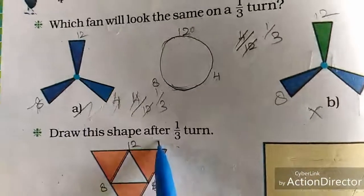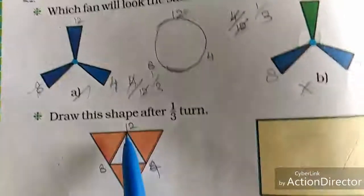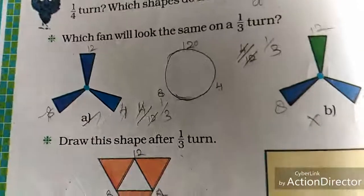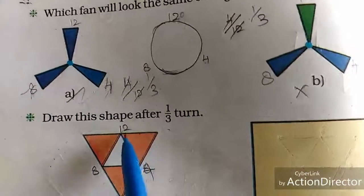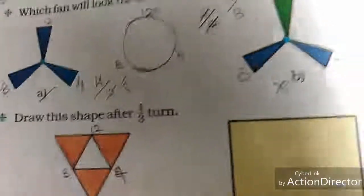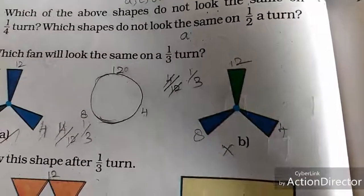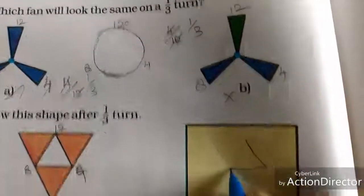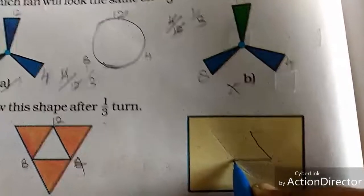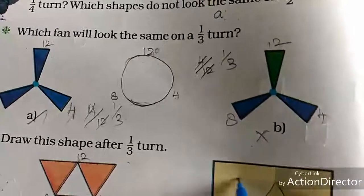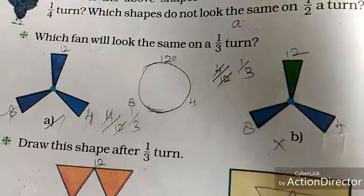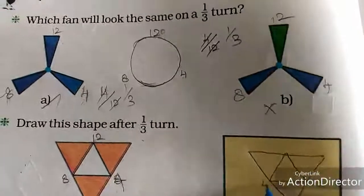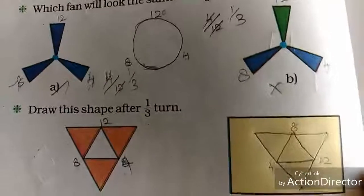Next, draw the shapes after one-third turn. You have to mark like this: twelve, four, eight. The twelve will come in fourth. Again, it won't change. After the one-third turn it looks like the same position. Twelve, four, eight — it won't change.